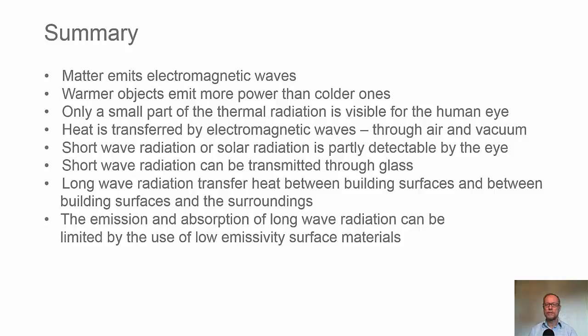Summary: Matter emits electromagnetic waves. Warmer objects emit more power than colder ones. Only a small part of the thermal radiation is visible for the human eye. Heat is transferred by electromagnetic waves through air and vacuum. Short wave radiation or solar radiation is partly detectable by the eye. Short wave radiation can be transmitted through glass. Long wave emission and transfer between building surfaces and between building surfaces and the surroundings. The emission and absorption of long wave radiation can be limited by the use of low emissivity surface materials.